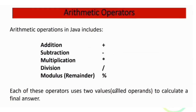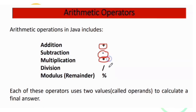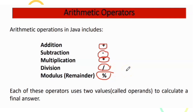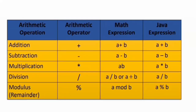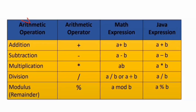Arithmetic operators in Java include addition, subtraction, multiplication, division, and modulus. Modulus is also known as remainder. Each of these operators uses two operands to calculate the final answer.